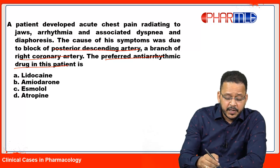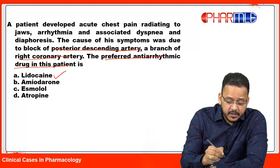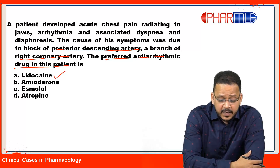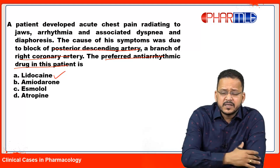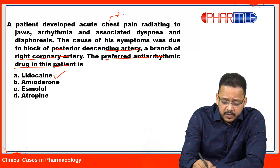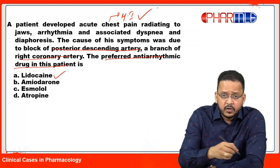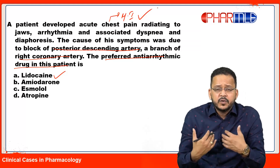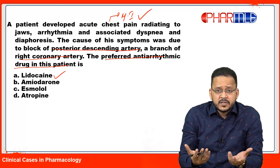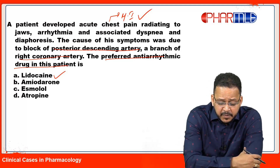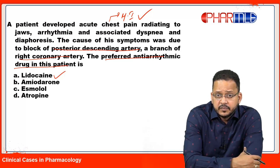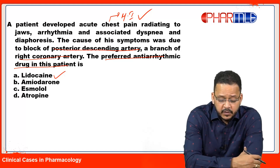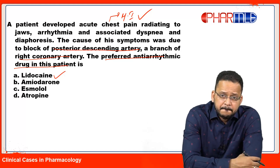Now for this question, I'm quite sure many of you would have marked lidocaine as the answer. The reason being: you diagnosed that the patient developed acute chest pain radiating to the jaws with arrhythmia — this is a case of MI or myocardial infarction. And what we know is the drug of choice for arrhythmia caused by MI is lidocaine.